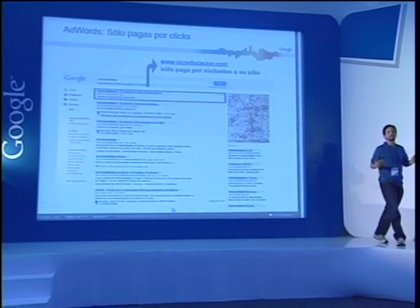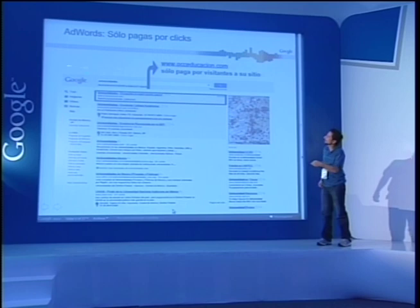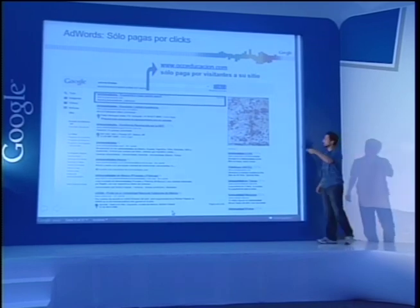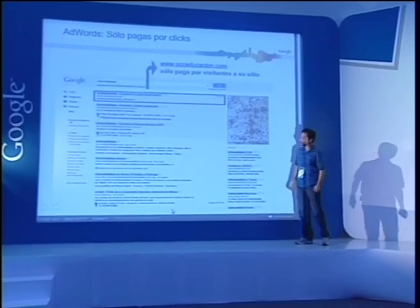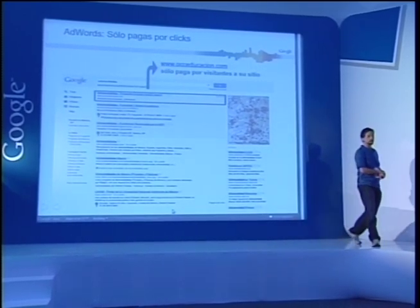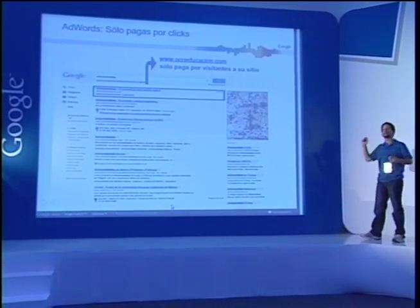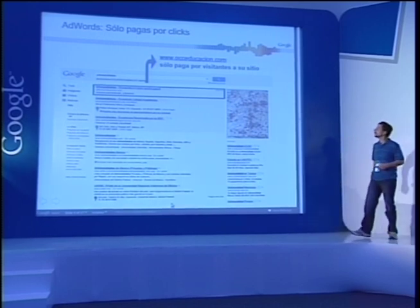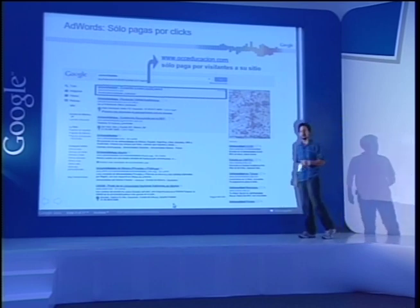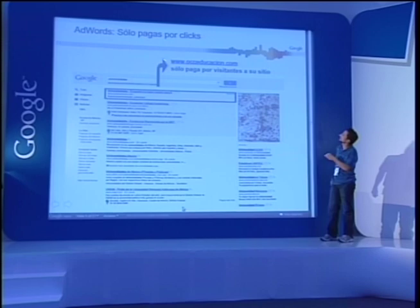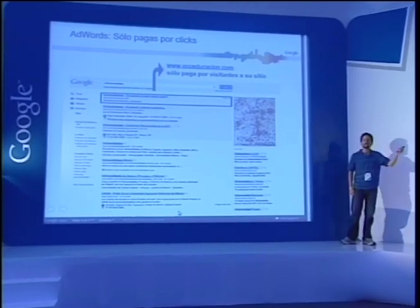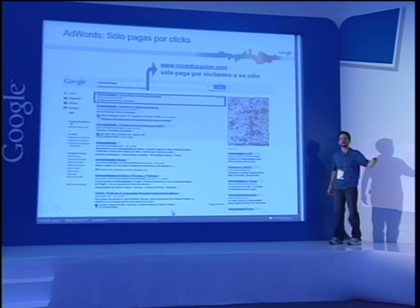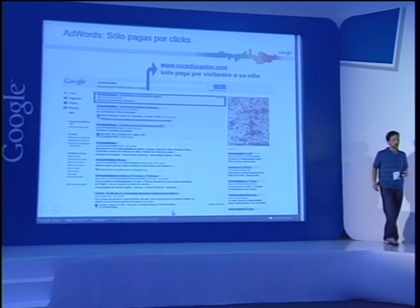¿Cómo funciona AdWords? Una de las principales ventajas es que Google solamente cobra por clic. Esto quiere decir que si tenemos varios anunciantes y cada anuncio salió 100 veces, no vamos a cobrar como un periódico por el número de impresiones o tiraje, sino por las veces que en serio el usuario hizo clic al sitio y lo visitó. Puede salir 10 mil veces y Google no cobra eso. Esto ayuda a los anunciantes a ahorrar dinero.